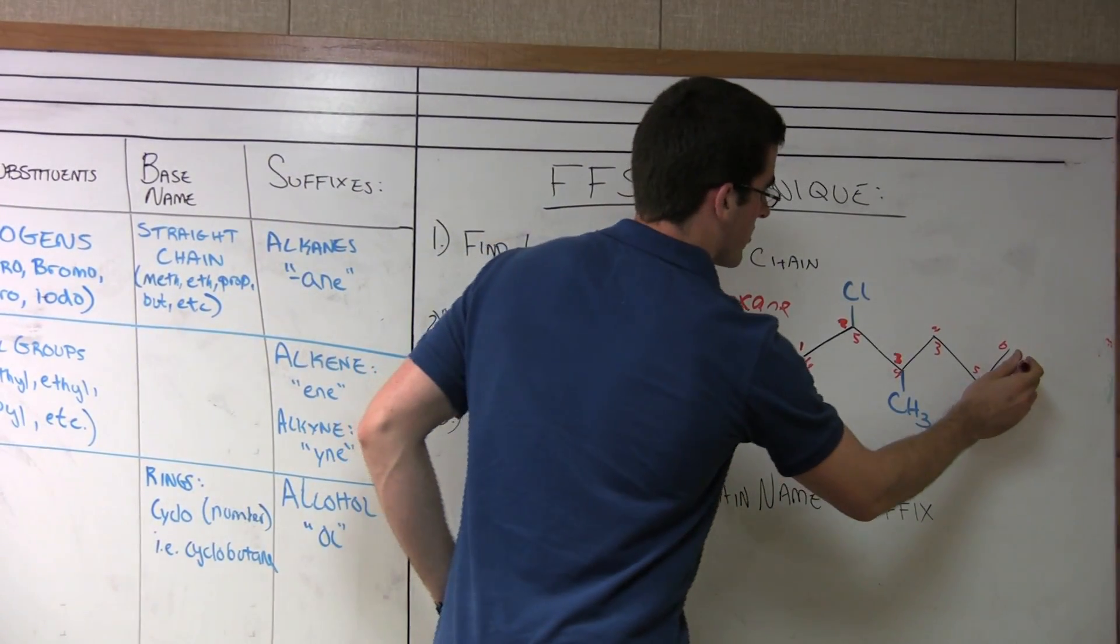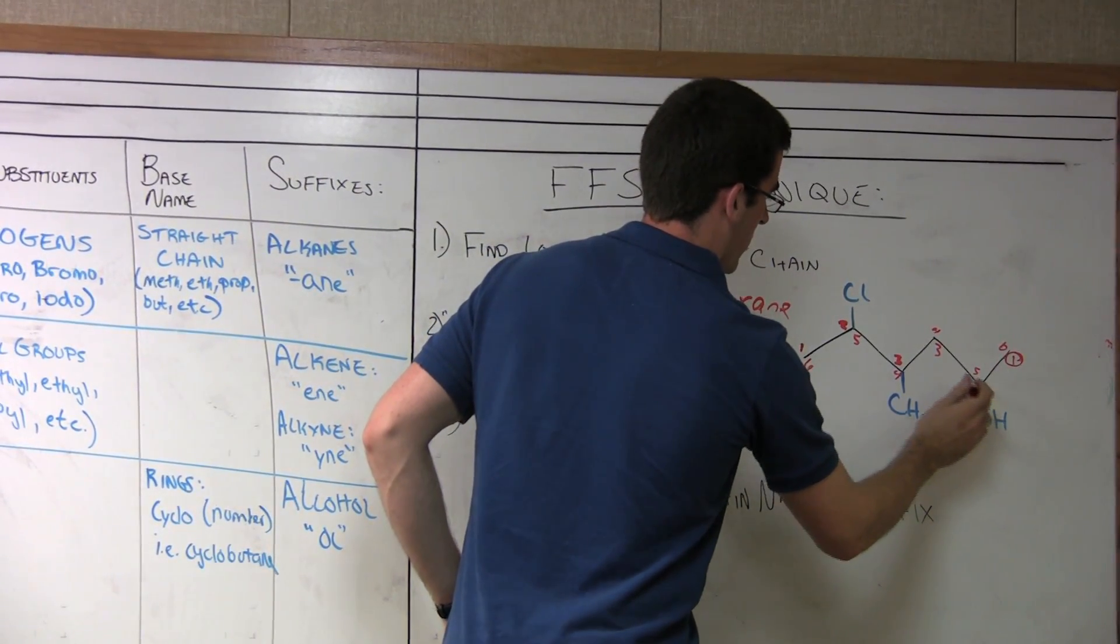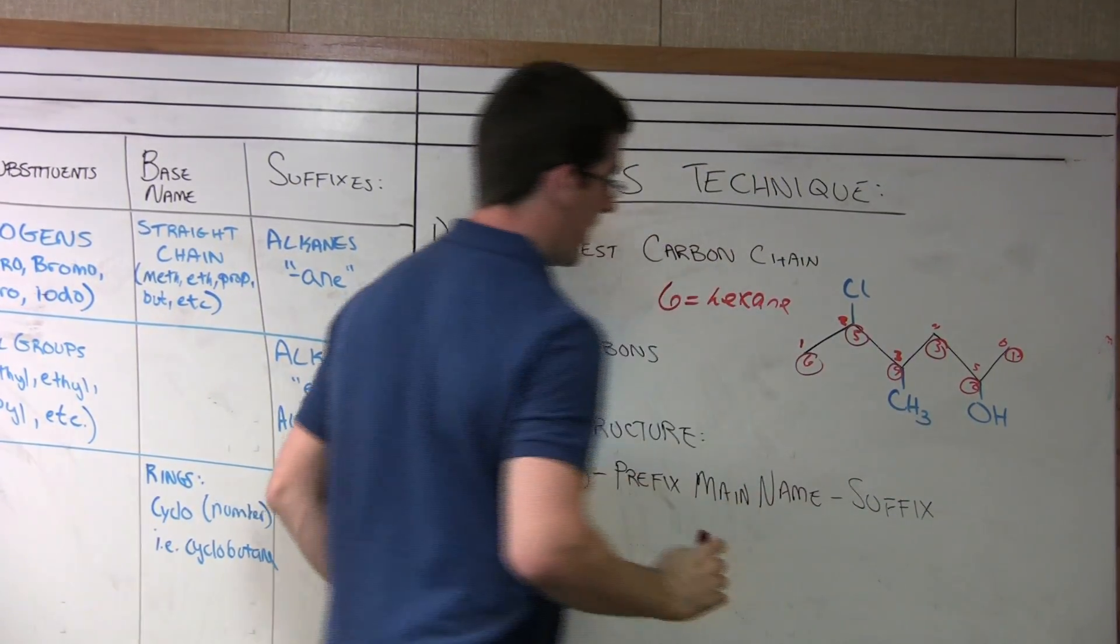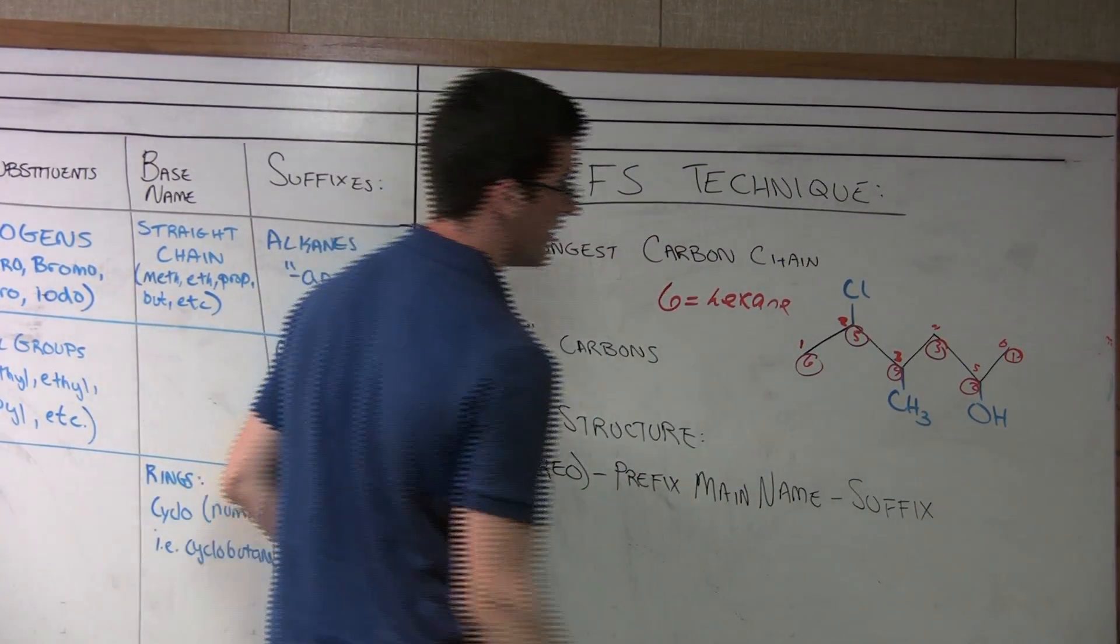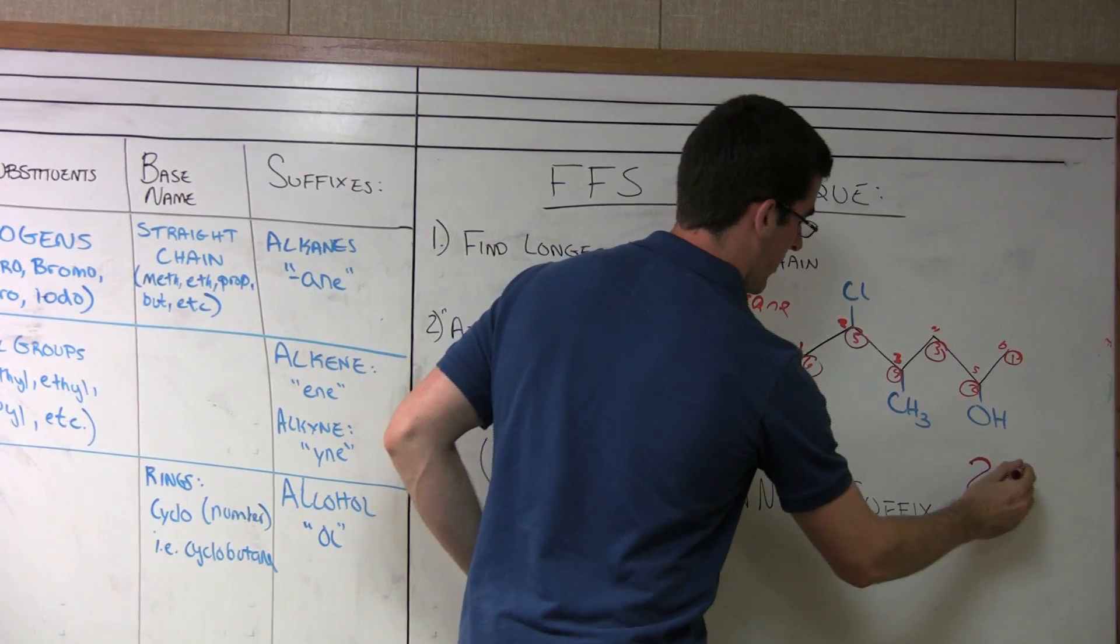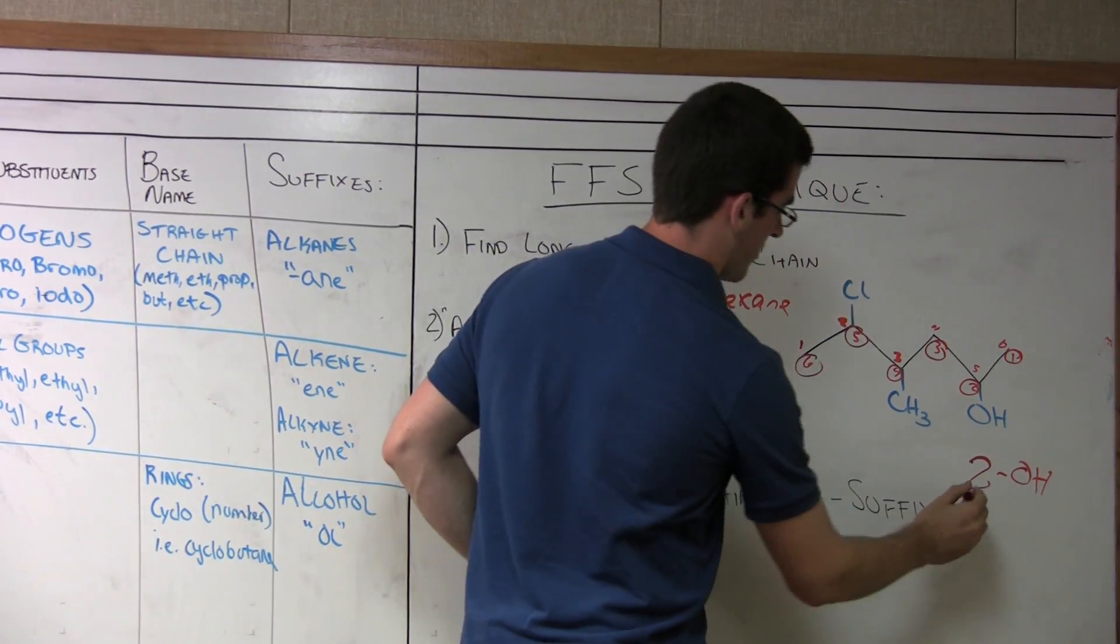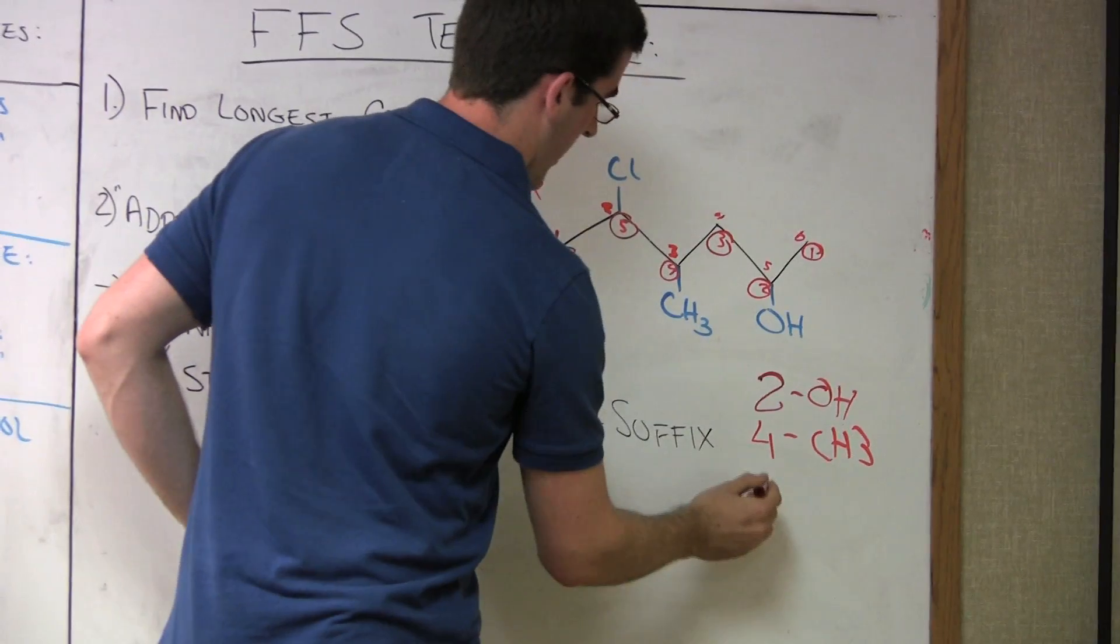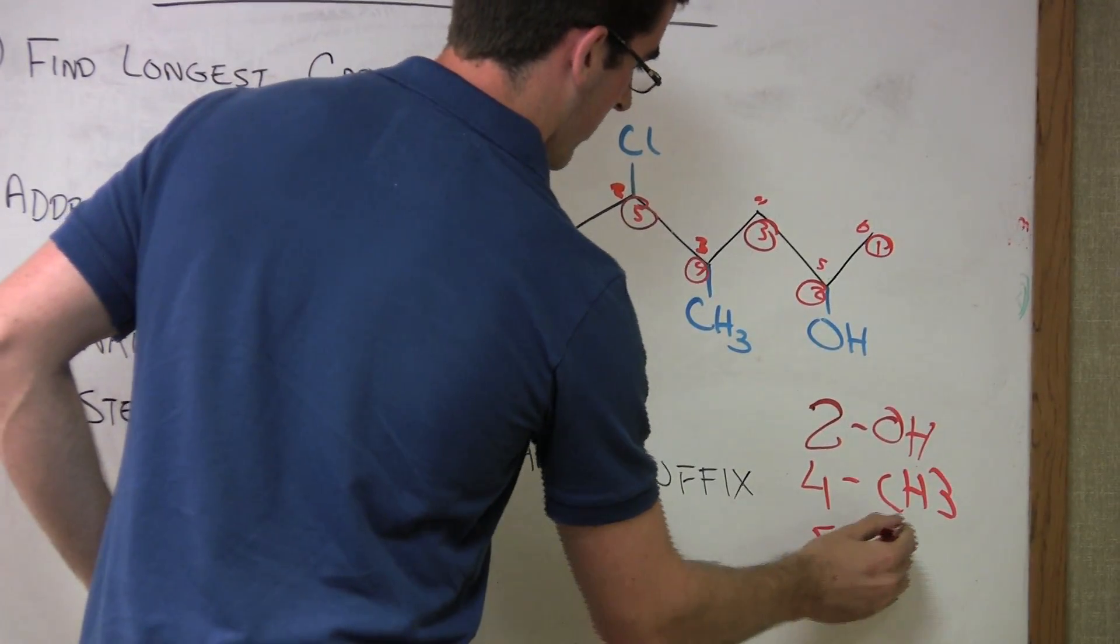So we circle the numbering system we want: one, two, three, four, five, six. Now I can write these down for reference. At the two position, I have my alcohol. At the four, I have my methyl group. And at the five position, I have my chlorine.